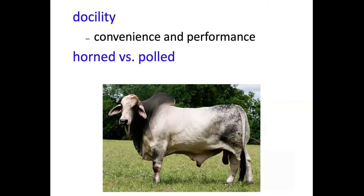Horned versus polled — there's a real advantage to polled animals: you don't have to dehorn those calves or tip horns at the feedlot. Some marketing programs require animals to be polled, and I think that'll be a bigger thing moving forward. Anytime I can buy a polled bull, I definitely want to look at that. Even in breeds where we didn't used to see many polled animals, we're starting to see more, and Brahman cattle have really increased their number of polled animals.